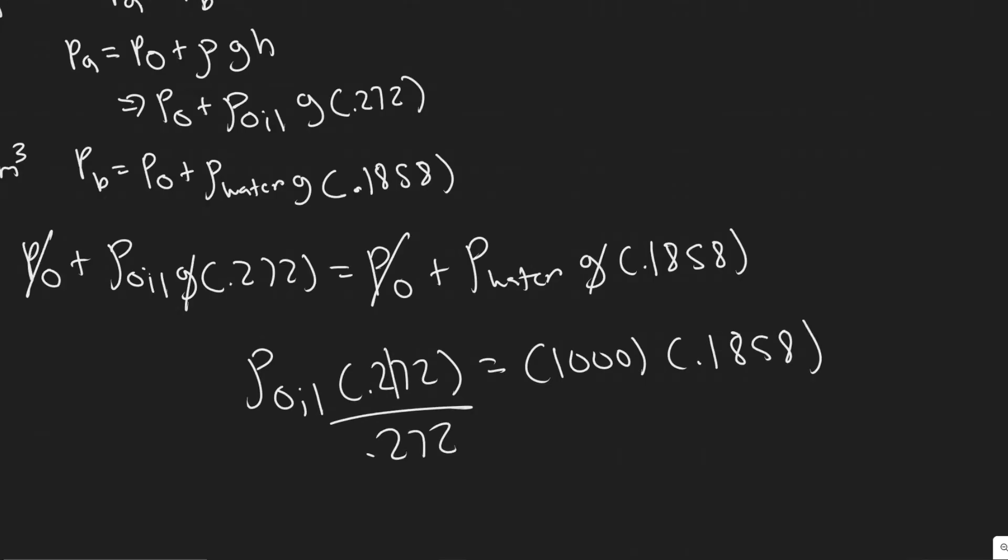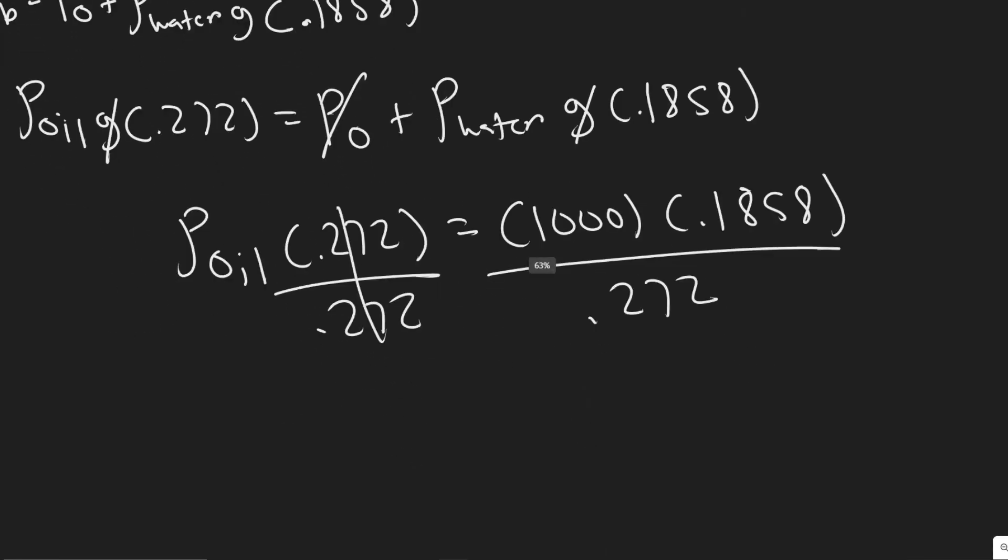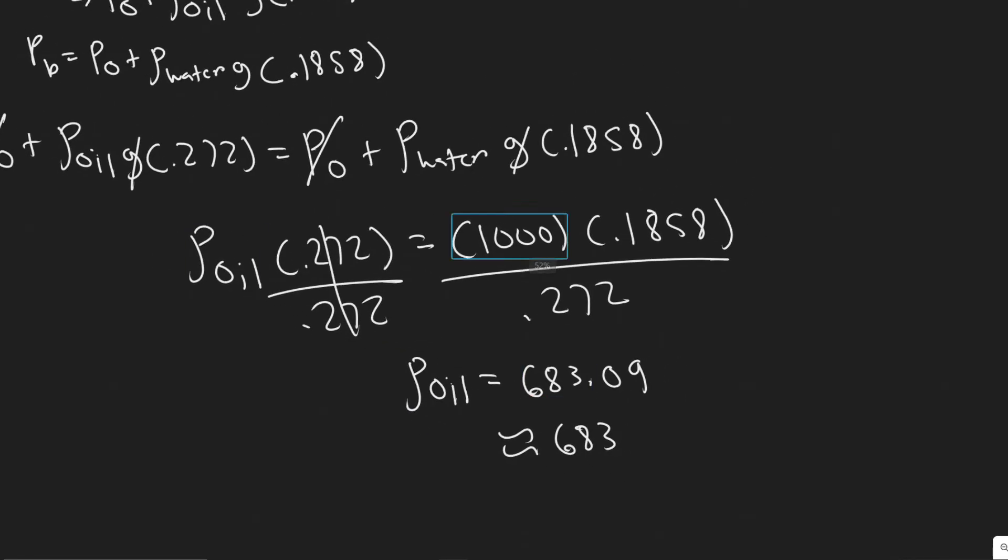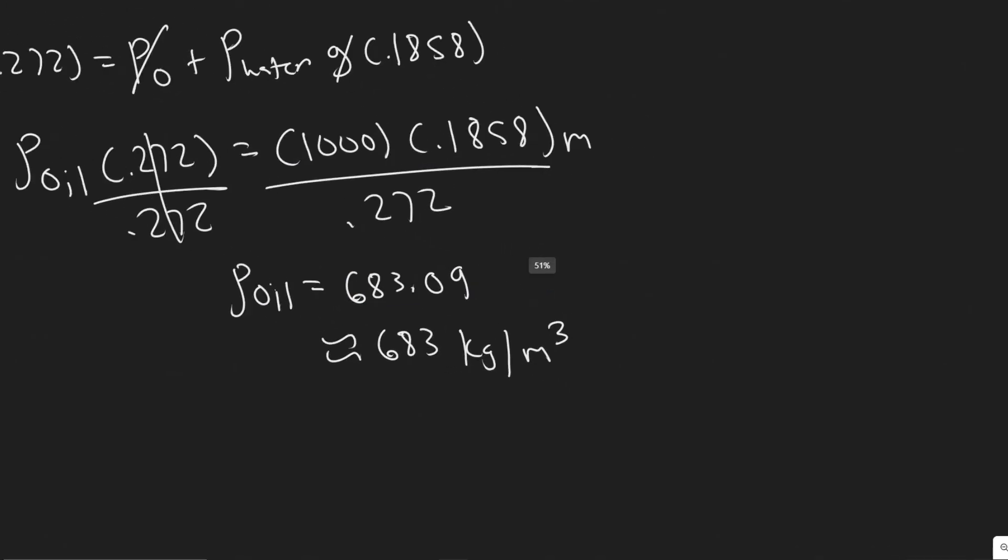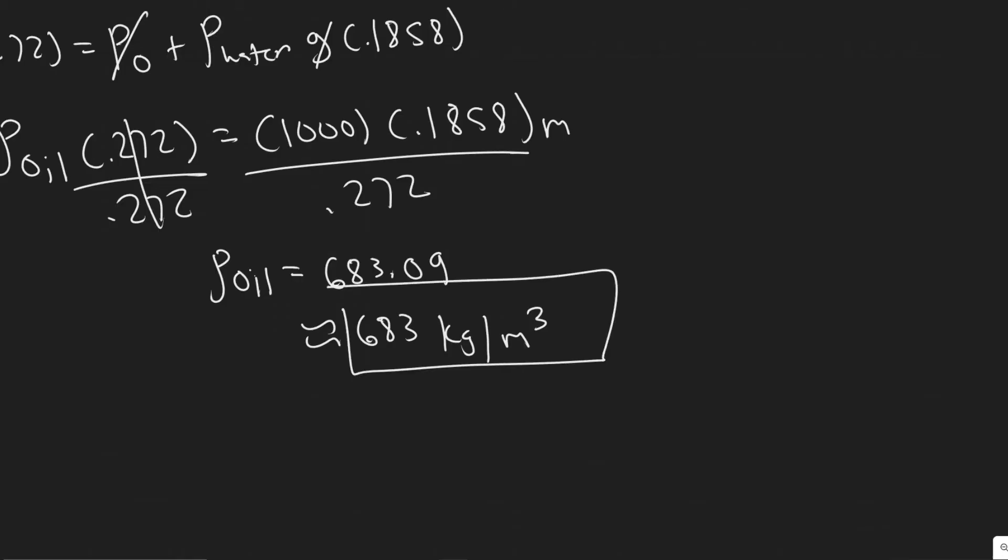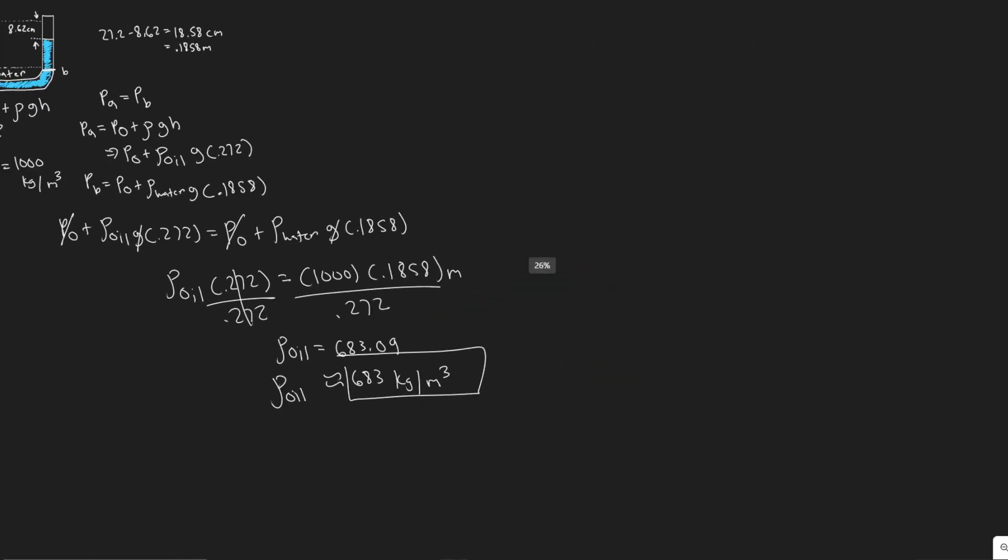So if we want to solve for the density of the oil, you would just divide. So putting this in, 1,000 times 0.1858 divided by 0.272, you're going to get the density rho of the oil is equal to 683.09, basically. So about 683. And then keep in mind, we use kilograms per meter cubed for the density of water. So we have the same units since these units will just cancel. This is meters, so they just cancel. So you could have left it in centimeters, but it's always good to cancel it like that, or just to have it in meters. So you have your density of the oil here. The oil is 683 kilograms per meter.